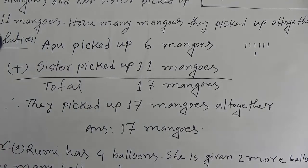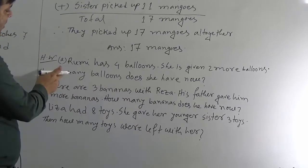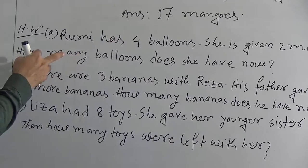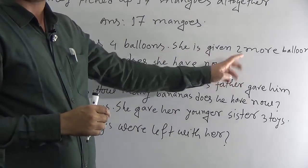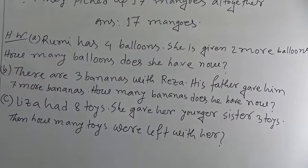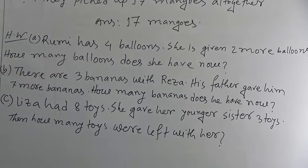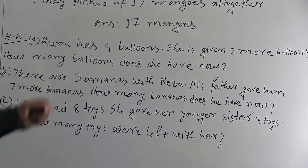Okay dear students, we have solved 3 word problems. Now there are 3 remaining word problems for you to solve at home. Question A: Rumi has 4 balloons and is given 2 more balloons — how many does she have now? You have to add 4 and 2. Question B: Reza has 3 bananas and his father gave him 7 more — how many does he have now? Add these 2 numbers to get the answer.